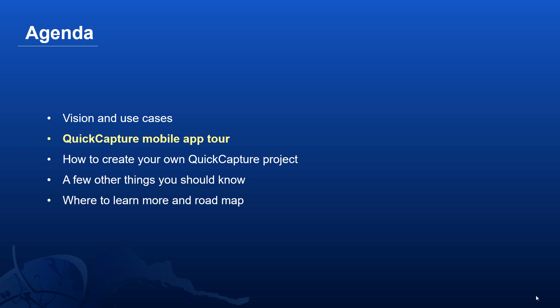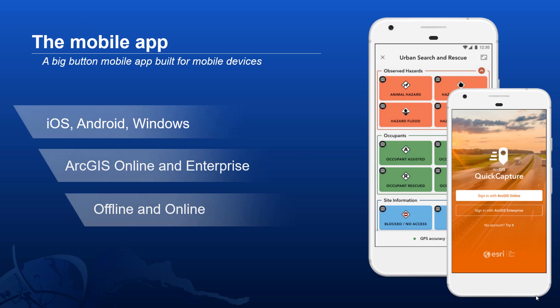Quick Capture is really about a different user experience for field data capture — extremely simple and well suited for specific workflows where people either cannot be trained or don't want complications. It's a great complement to other field data collection applications like Survey123, Collector, and others. The mobile app works on iOS, Android, and Windows.